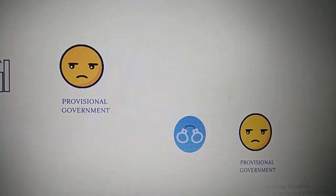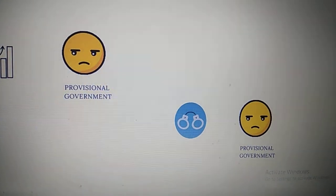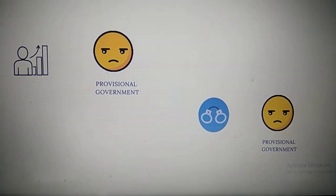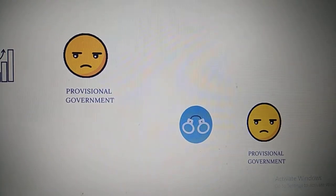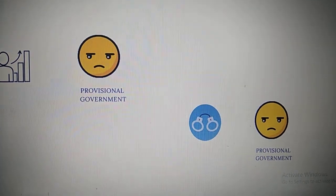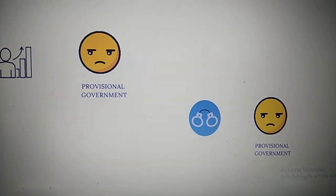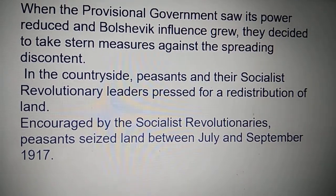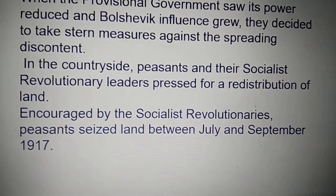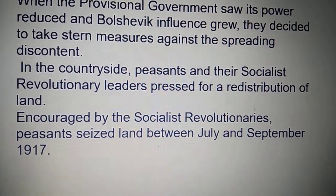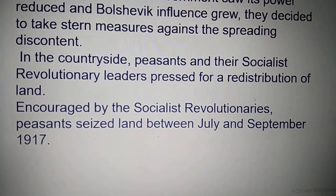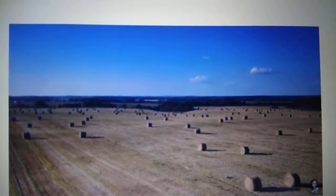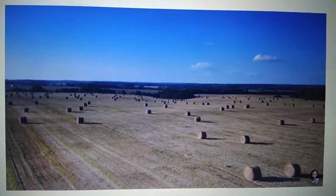The leaders of the Bolshevik Party were also surprised at Lenin's demands, feeling it was too early for the socialist movement and that they must support the provisional government. But later, with certain developments, they also realized that change was required and they were moving toward a socialist form of government. In the countryside, peasant and socialist revolutionary leaders pressurized for redistribution of land, and encouraged by the socialist revolutionaries, the peasants seized land from the landowners between July and September 1917.